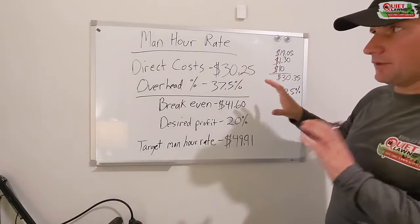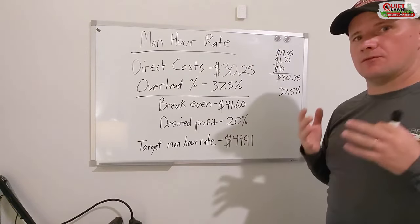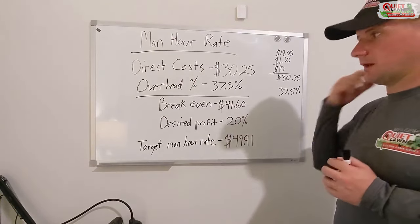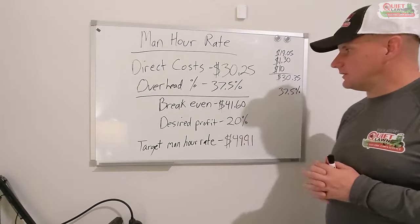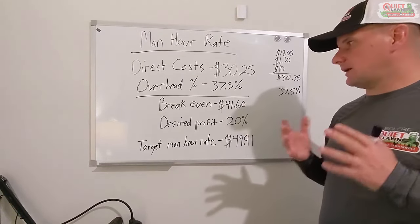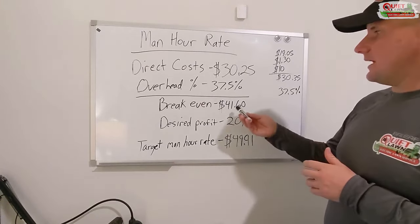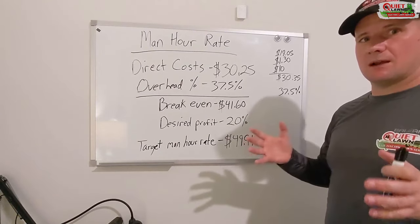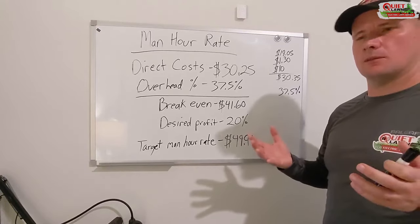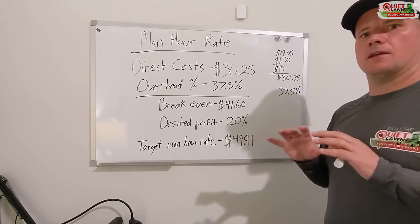A little side note — we're doing this based on one-person crews. This is your man hour rate for each person. So if you have two people on a crew, it's double this. Our break even is $41.60 per hour. That means if you have one person going out mowing and they work 10 hours, they need to make $416 minimum for you to break even. If they make any less than that, you are losing money. So your break even is the very minimum you can make and not lose money.